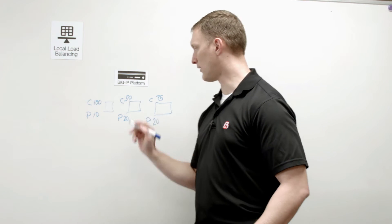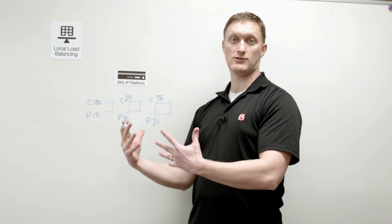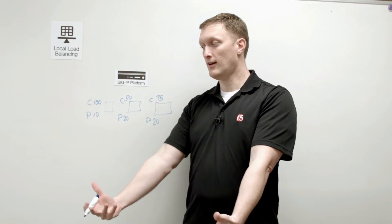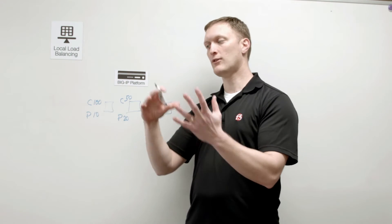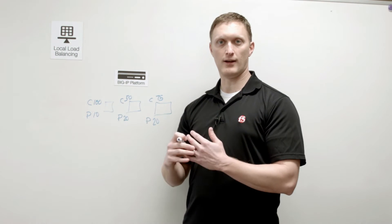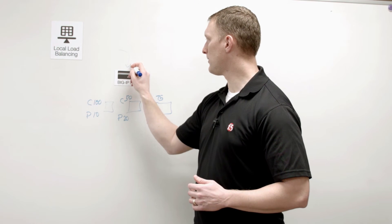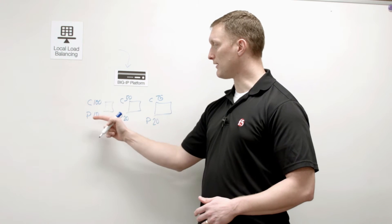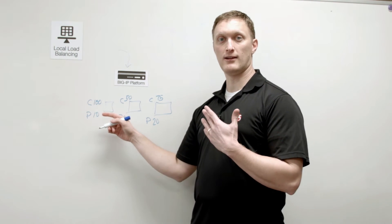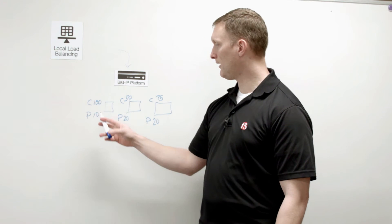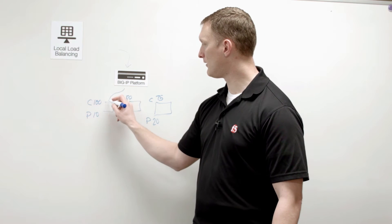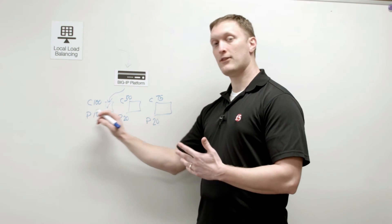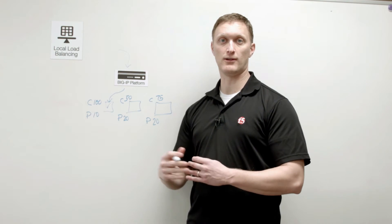When a connection comes in, if it has a persistence record it will go to whatever server it's persisted to. But for a new connection without a persistence record, with least sessions the BIG-IP looks at the persistence table of each back-end server and asks: which one has the least number of persistence records? In this case it's the third server, so the new connection goes there. It continues looking at persistence records each time to decide where to load balance.